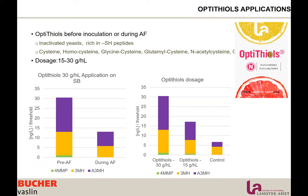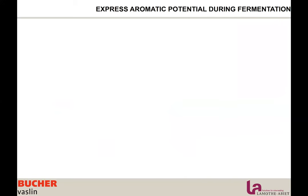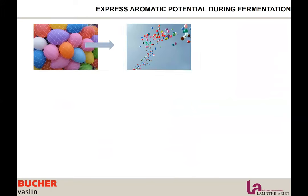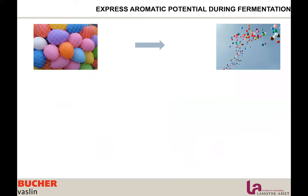Optitiol is a very good way to enhance the amount of precursors in the wine, and also because it contains glutathione, you are increasing the protection of your thiols. This composition also favors yeast conversion. Speaking of conversion, I would now like to talk about how to express this potential — precursors are not volatile, we need to make them free and volatile.